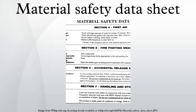Section 6, Accidental Release Measures. 6.1. Personal precautions, protective equipment and emergency procedures. 6.2. Environmental precautions. 6.3. Methods and material for containment and cleaning up. 6.4. Reference to other sections.